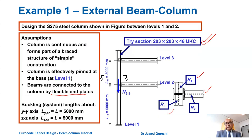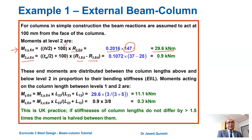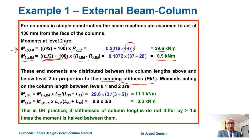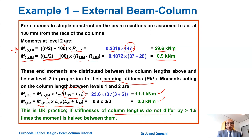M2ZED is the minor axis moment. In the minor axis, two beams are connected, so we take R1ED minus R3ED multiplied by TW (thickness of web). Converting to metres gives 0.9 kNm. These end moments are distributed between column lengths above and below level two in proportion to the bending stiffness. The moment acting on the column between level one and two is M2YED times the length of the column above divided by the combination of lengths at the level below. We get 11.9 kNm in major axis and 0.3 kNm in the minor axis direction. The UK practice is that if the stiffness of columns does not differ by greater than 1.5 times, the moment is usually halved; here the exact values are used.